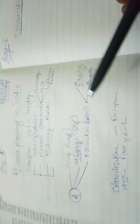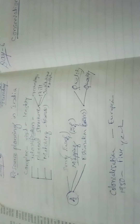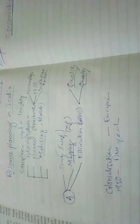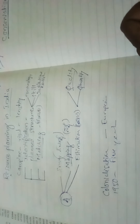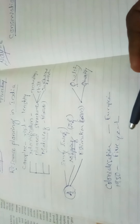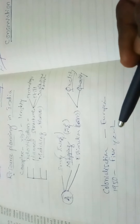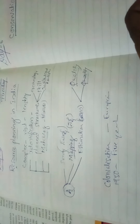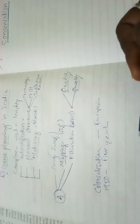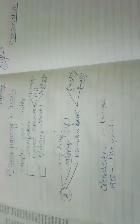Resource planning was given formal importance from the time of implementing Five Year Plans starting in 1950. From the first Five Year Plan onwards, all subsequent plans gave importance to using resources in a planned way so that resources could support developmental activities at different stages and levels.